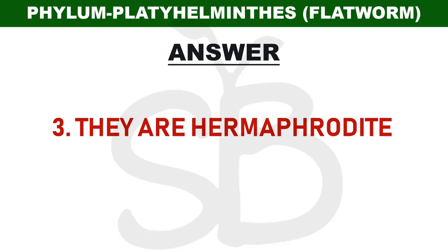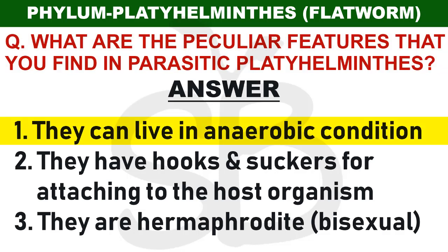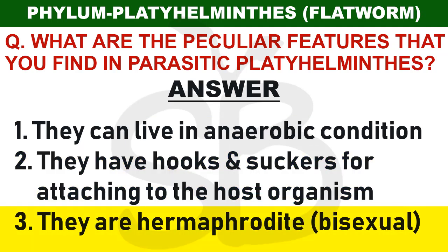There is no separate sexual reproduction. They are hermaphrodites - bisexual organisms. Male and female reproductive organs are in the same body, and both male and female gametes are produced in one tapeworm. They live in anaerobic conditions, and they have hooks and suckers for attaching to the host organism.